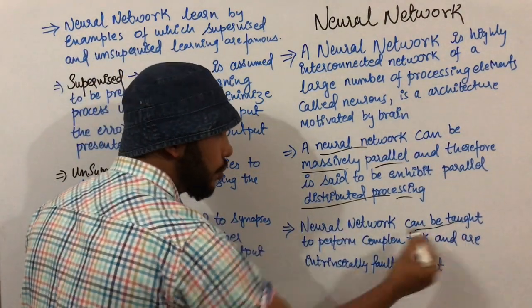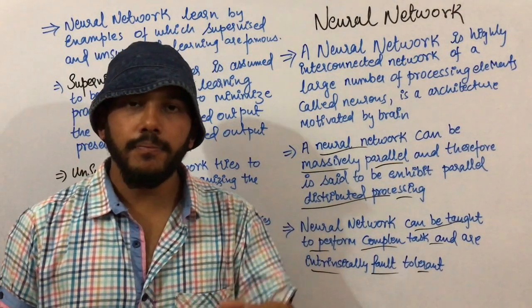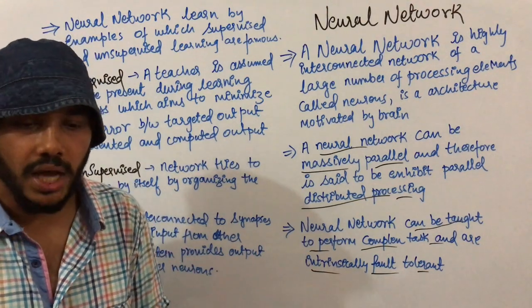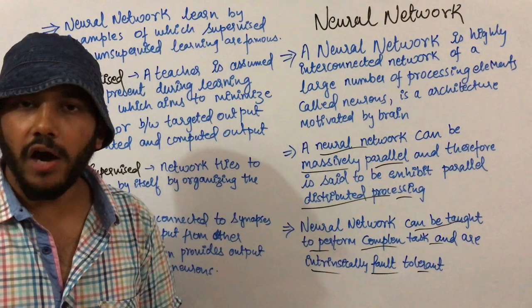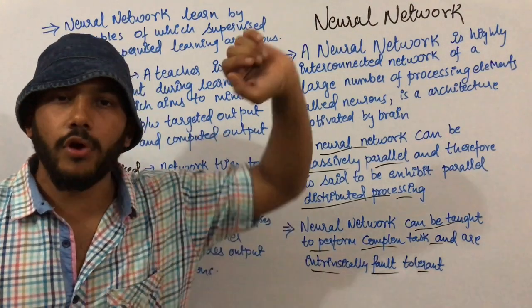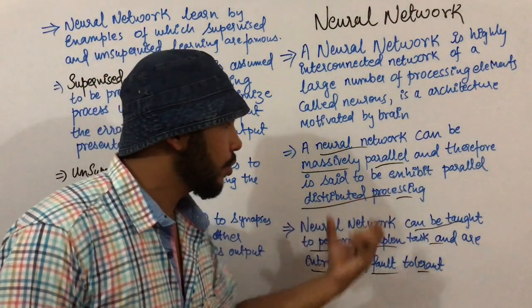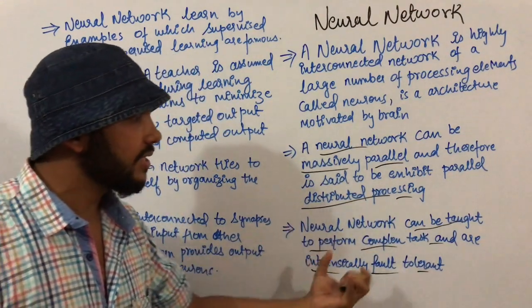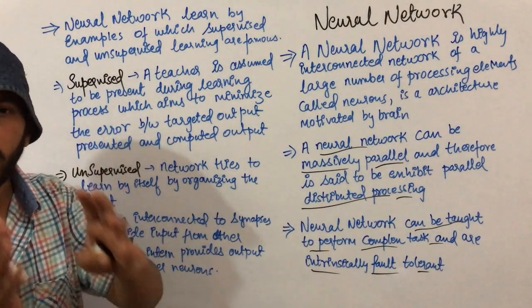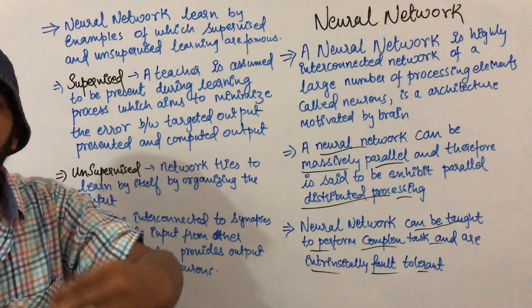Neural networks can be taught to perform complex tasks and are intrinsically fault-tolerant. For example, when you first touch a hot cup, you learn to remove your hand, and after five to ten minutes when you touch another hot thing, you easily remove your hand because your neurons have learned from previous history. If a fault occurs in the program, neural networks can manipulate or recover from that fault.